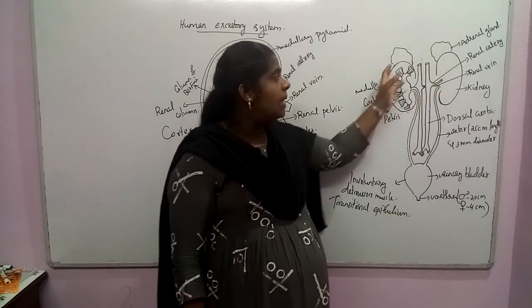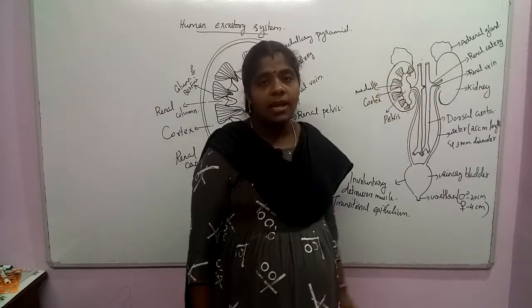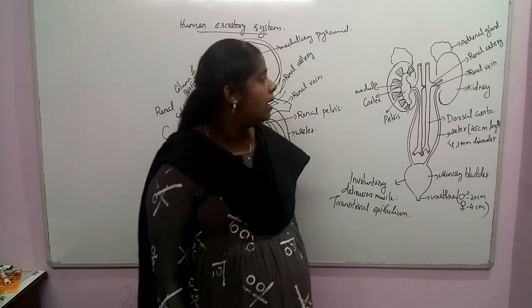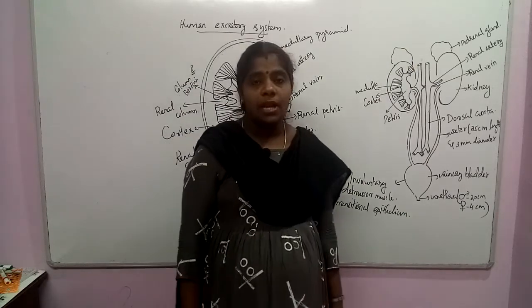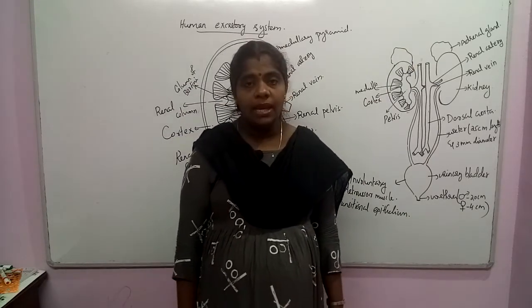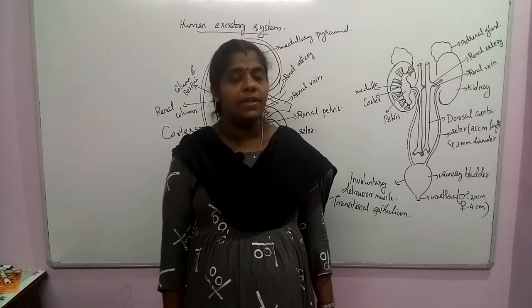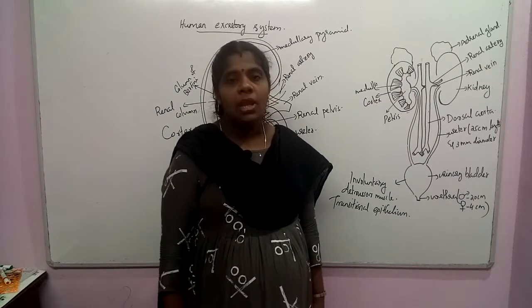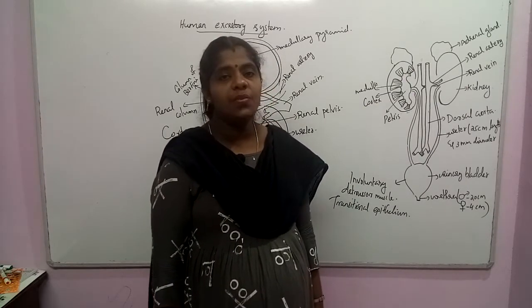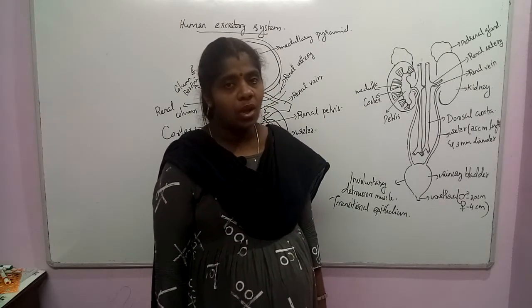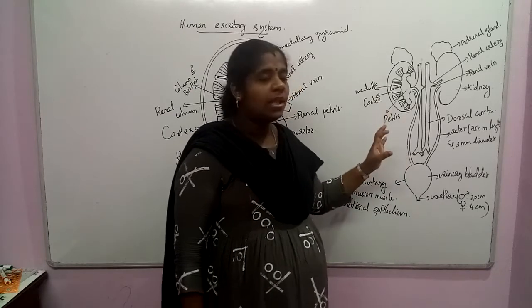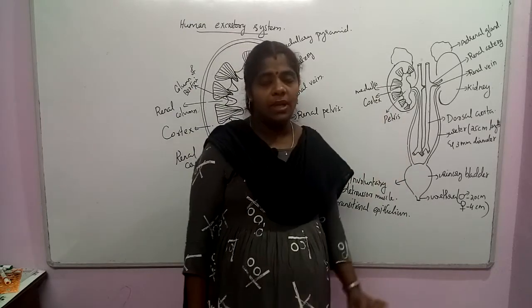The adrenal gland sits on top of each kidney. The kidney has a length of 10 to 12 cm, a width of 5 to 7 cm, and a thickness of 2 to 3 cm. It is a reddish brown coloured organ enclosed by a thick capsule.